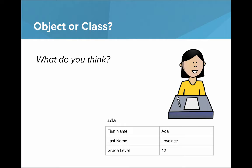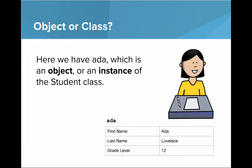Here we have a setup and we need to figure out is this an object or a class. We have Ada who's in the student. Is this an object or is this a class? What do you think? The answer is object. Ada is an object or instance of the student class.